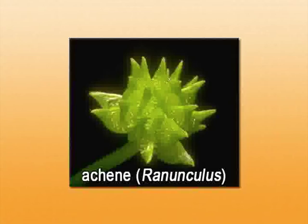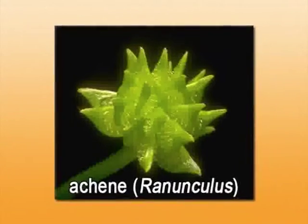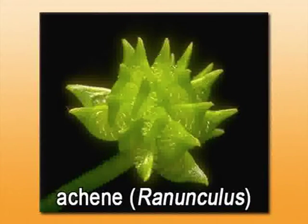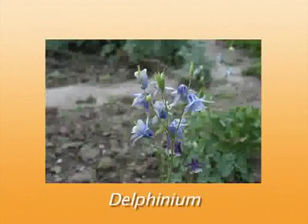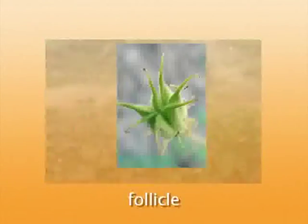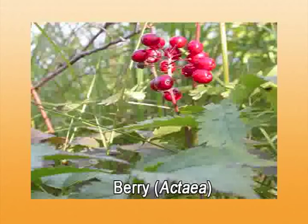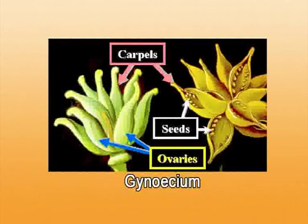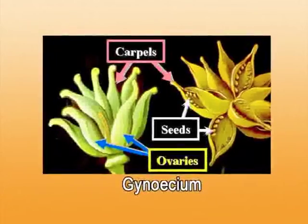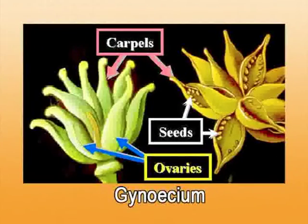Coming to the fruit: the fruit usually is an achene, as is the case in the type genus Ranunculus. In some cases it is a follicle type of fruit, as in Delphinium, or it can be a berry in the case of Actaea, or rarely a capsule, as in Nigella. The seed inside the fruit has a small embryo, and endosperm is present.